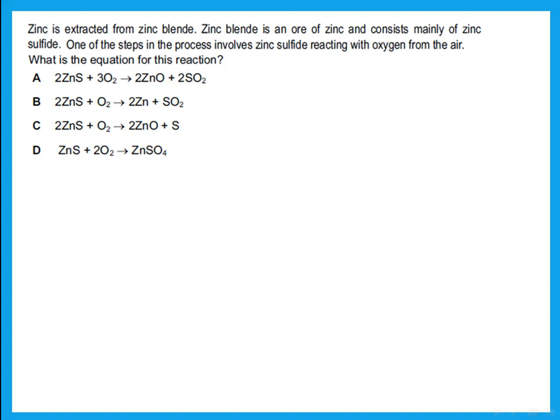Zinc is extracted from zinc blende. Zinc blende is an ore of zinc and consists of zinc sulfide. One of the steps involves zinc sulfide reacting with oxygen. We're looking for the equation where zinc sulfide reacts with oxygen. Remember, when zinc sulfide reacts with oxygen, both the zinc and the sulfur have to be oxidized. Option C is wrong because sulfur wasn't oxidized, and D is wrong for similar reasons.